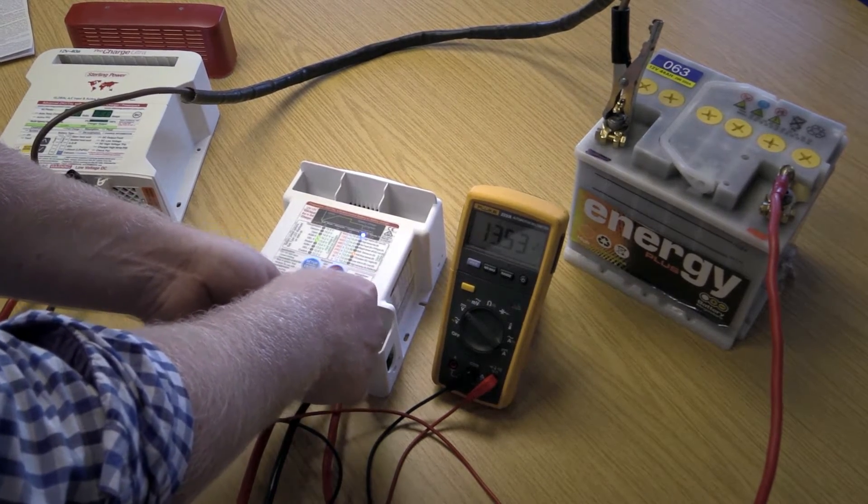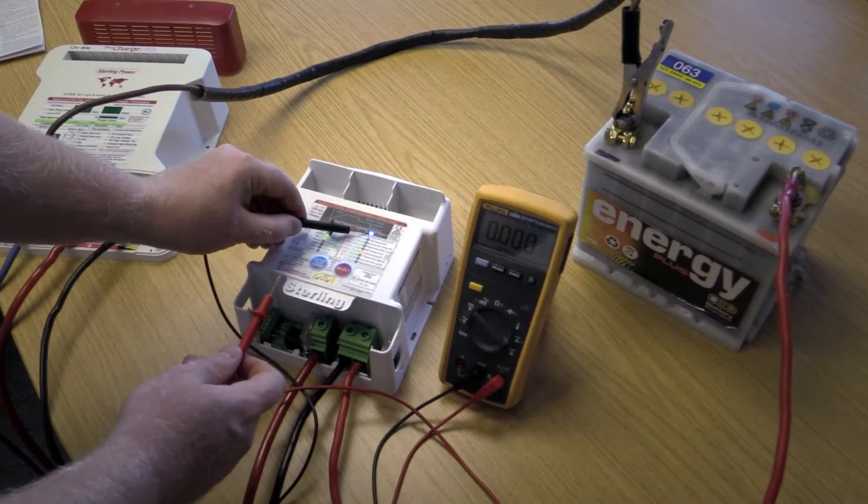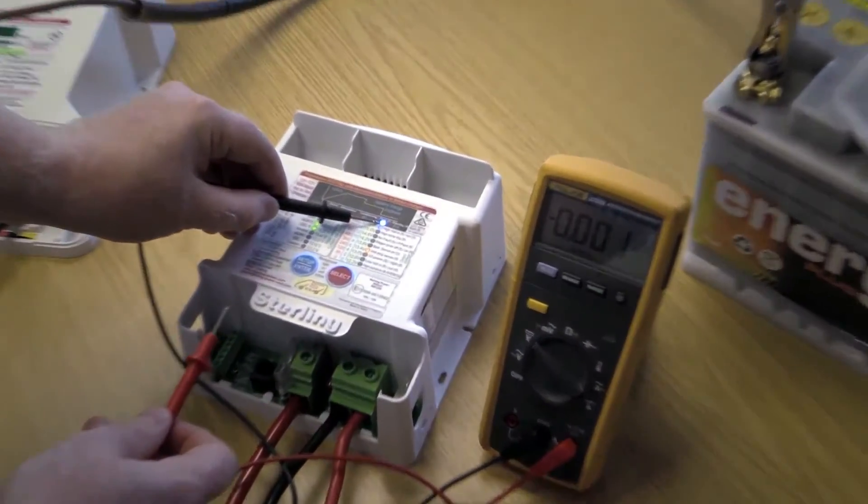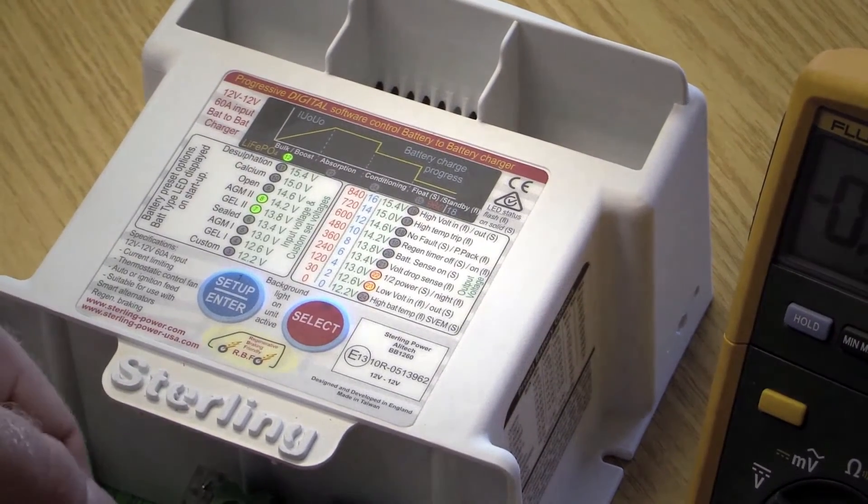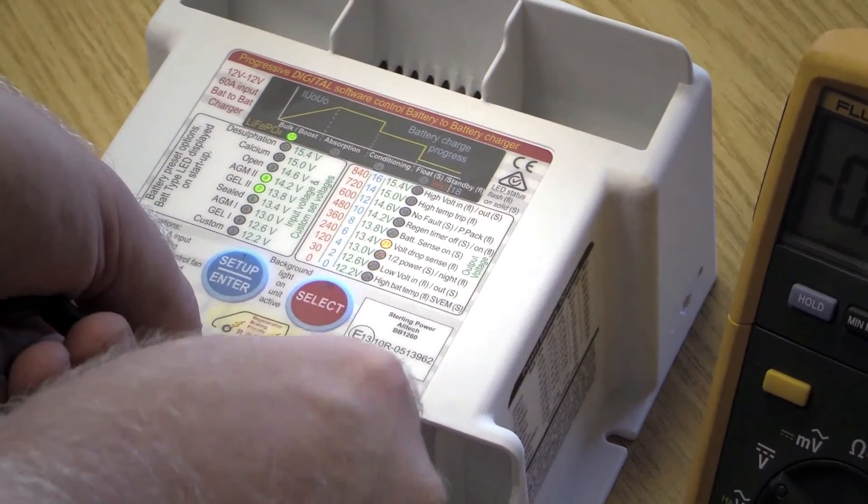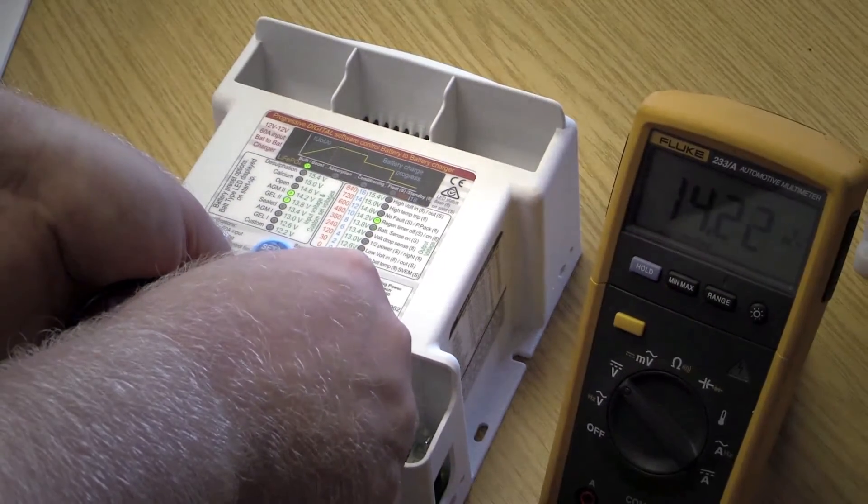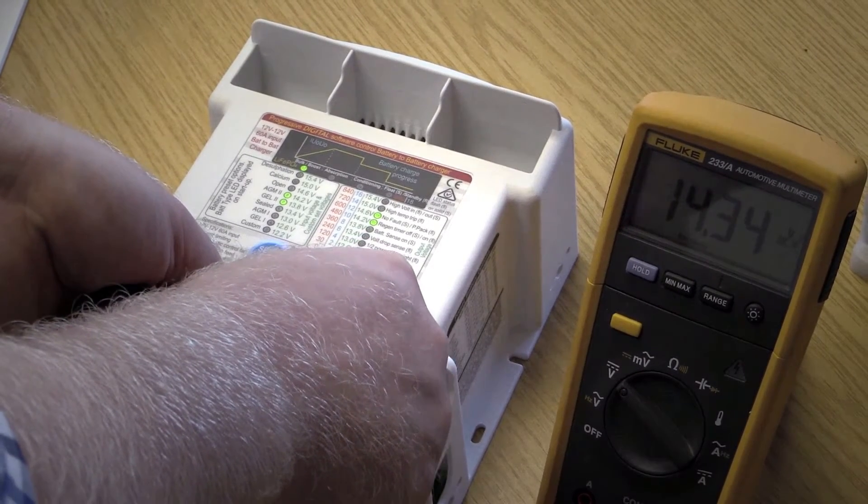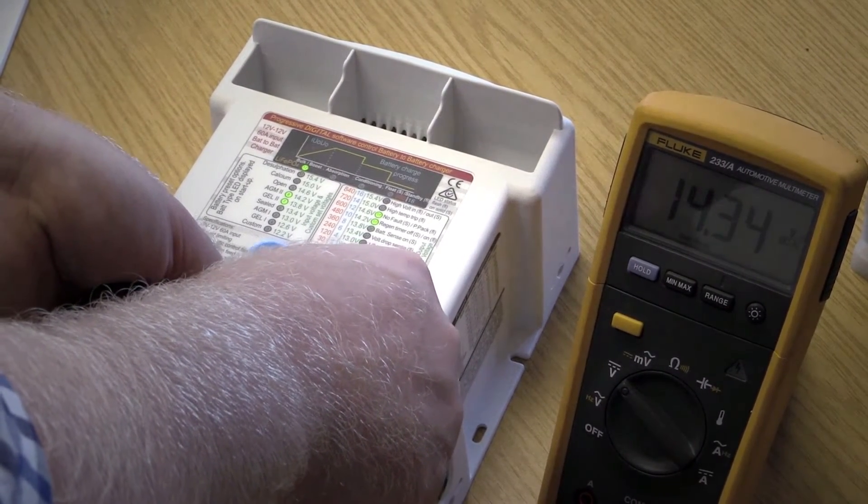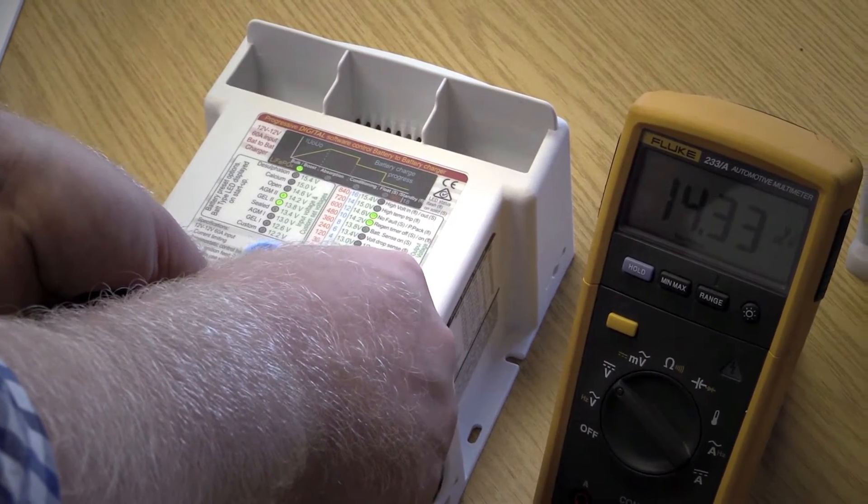As you can see, this float LED is on the blue one here. And in order to get it out of float mode, simply hold down these two buttons for a couple of seconds. So one, two, let go. LED now goes over to bulk boost. And then let's see what the output voltage goes up to now. So you're now looking at 14.1, 14.2, 14.3. So the unit has now been taken out of float mode accidentally and then put back to where it should be, which is back into bulk boost.